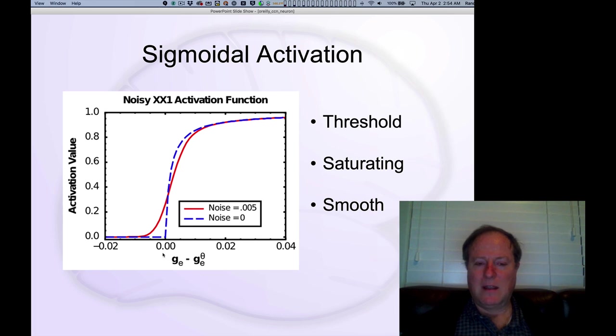I'll tell you what that x is in a second. It's actually the difference between the current excitatory conductance minus this kind of threshold level of an excitatory conductance. And that difference, basically when it's below zero we just set it to zero. Once it gets above zero it climbs up and you have this steep rising part and then a saturation. If you kind of imagine as you have x over x plus one.